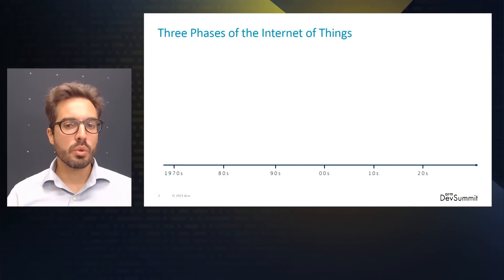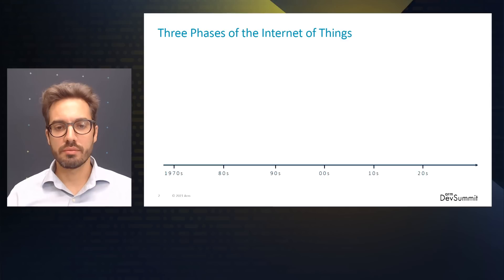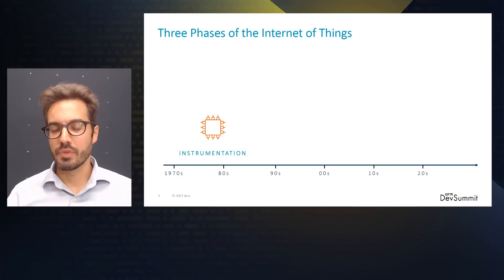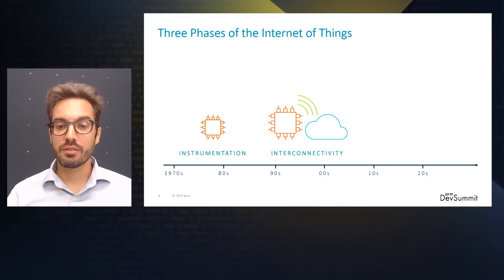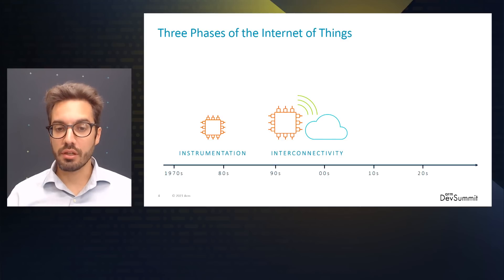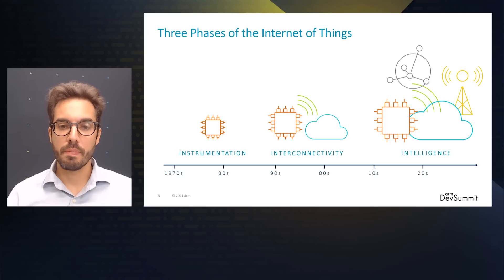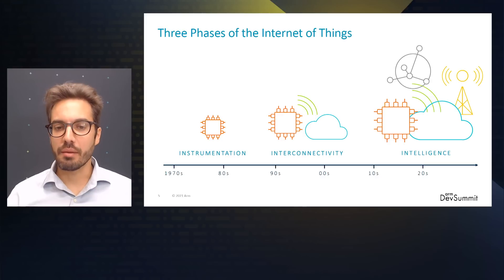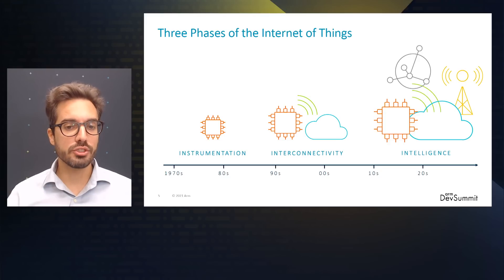Let's start with a bit of history. When talking about the Internet of Things, we can identify three distinct phases in its evolution. The first started several decades ago with the introduction of the microprocessor, leading to most everyday devices having an embedded microcontroller. The second phase is interconnectivity, where devices could talk to the internet or each other. The third and final step is intelligence — the phase we are in today — where MLOps is expected to drive a revolution across billions of devices from edge all the way to the cloud.